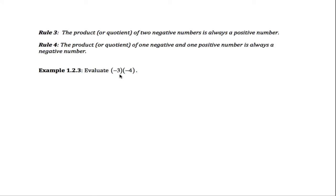In this example, we want to multiply negative 3 and negative 4. In order to do so, we'll apply our third rule here that says that the product of two negative numbers is always a positive number. We're multiplying two negative numbers, so this will be equal to a positive number.